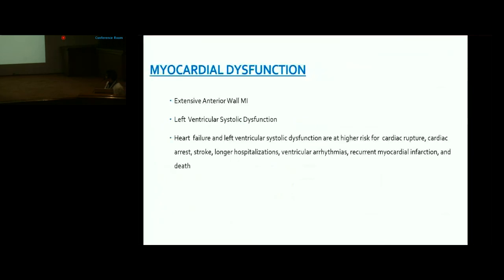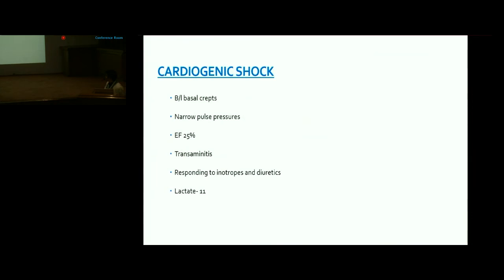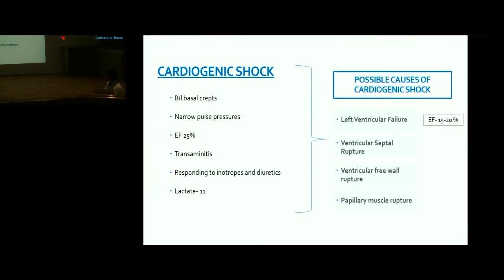Regarding cardiogenic shock, findings included bilateral basal crackles, narrow pulse pressure, EF of 25%, ischemic transaminitis responsive to diuretics and inotropes. Possible causes included LV failure, ventricular septal rupture, ventricular free wall rupture, or papillary muscle rupture — though none were found on echo.